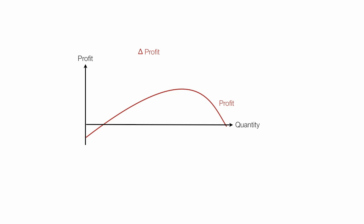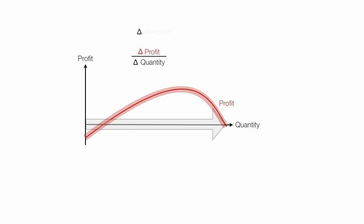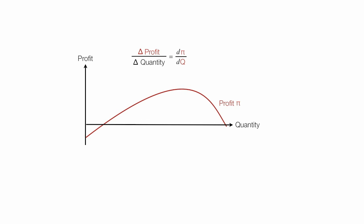The slope is the change in profit divided by the change in quantity. So as quantity changes, how does profit change? That little delta or triangle means 'change in.' I'll use d — d-pi, where that little symbol is used for profit often in economics texts — divided by the change in quantity. This is the first derivative of the profit line, and we're asking how profit changes as quantity increases.